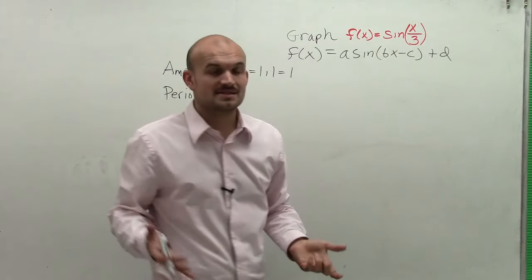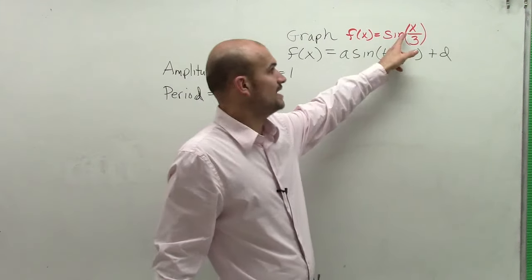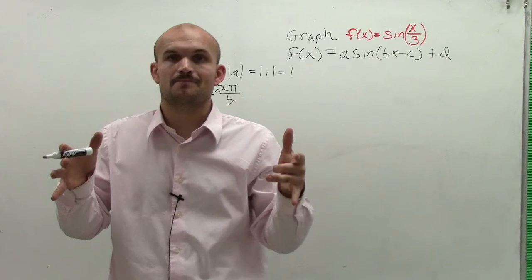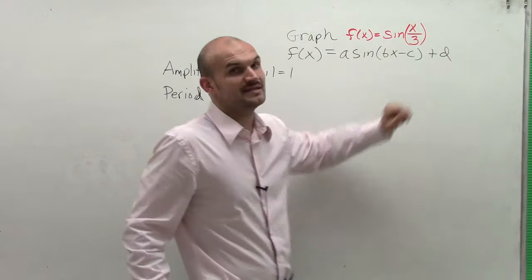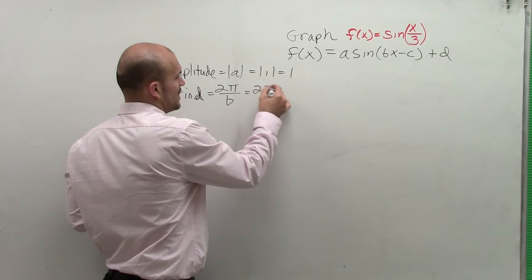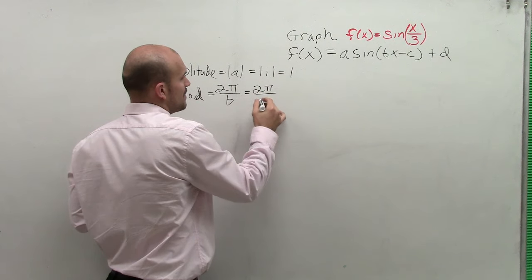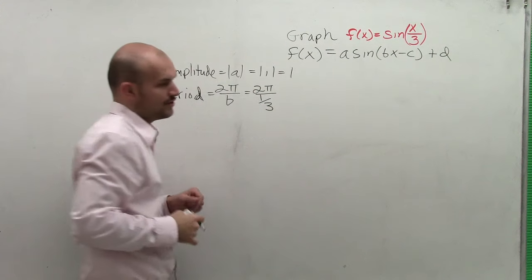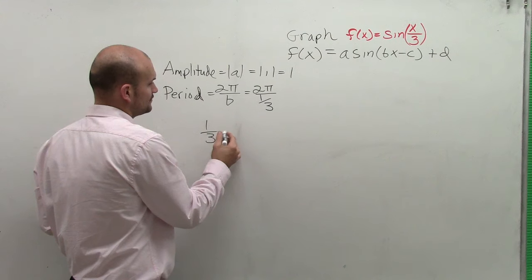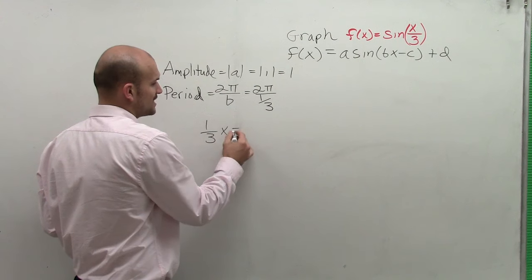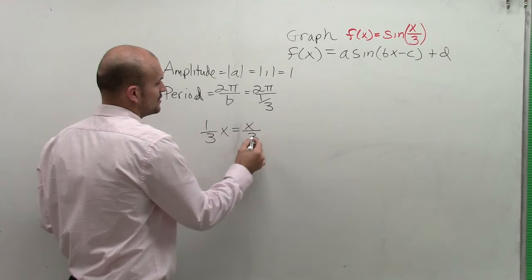So here you might say, well, I'm not seeing a variable. I'm not seeing anything in front of the x. But remember, we can always represent a 1 in front of your variable. And that 1 is being divided by 3. So therefore, I actually have 2 pi is being divided by my b is actually 1 third. It's the same thing we write. Like, if I said 1 third x is the same thing as x over 3.